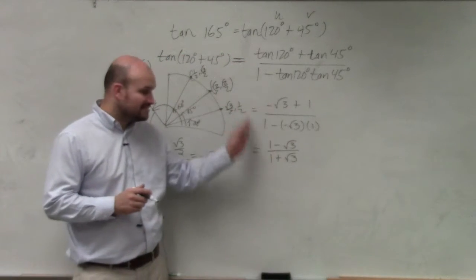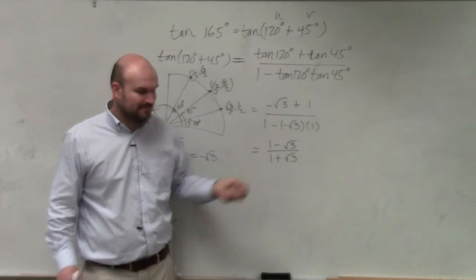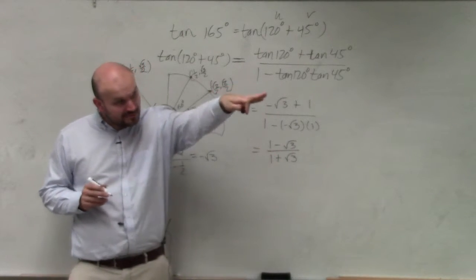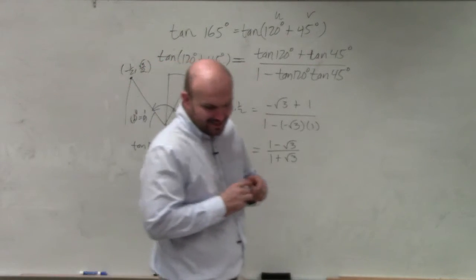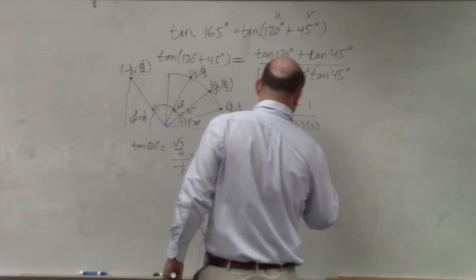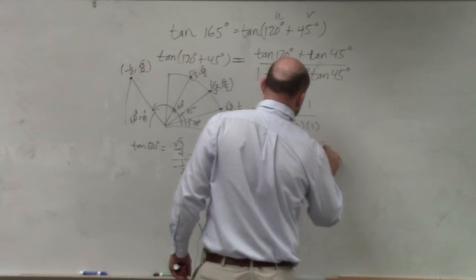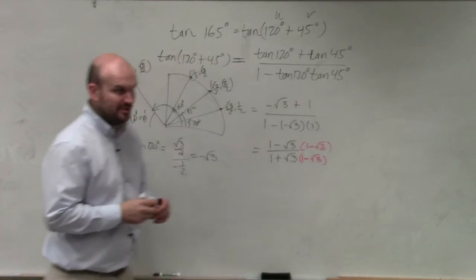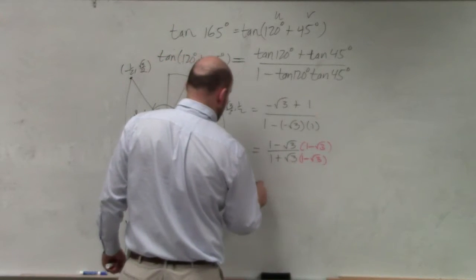Now, we can't divide these out, guys, because they're separated by addition and subtraction. OK? So we have to multiply by the conjugate to simplify. We go ahead and do this, and we end up with, let's see.